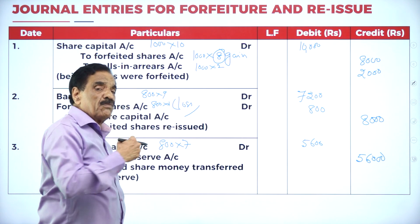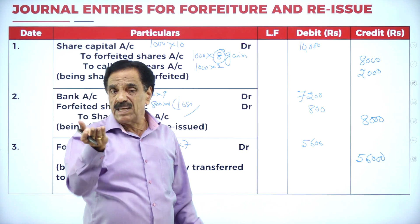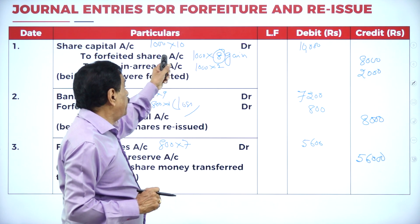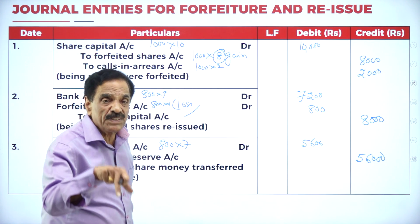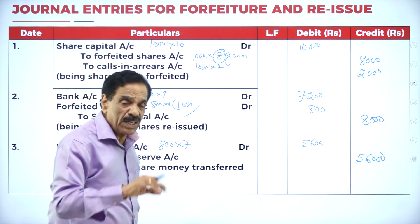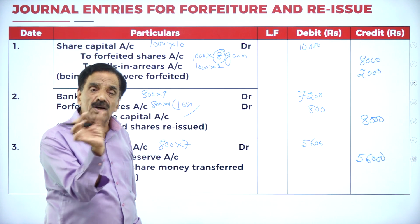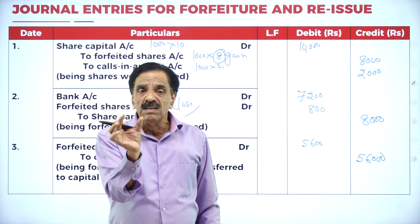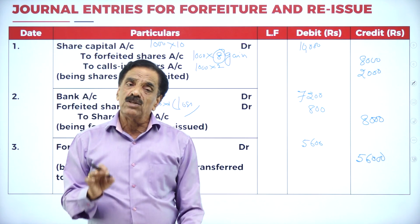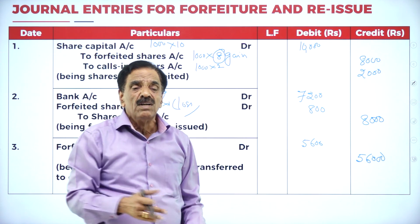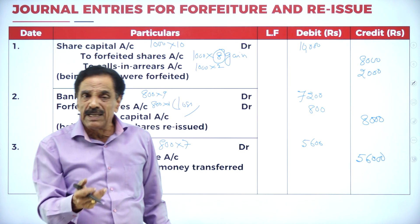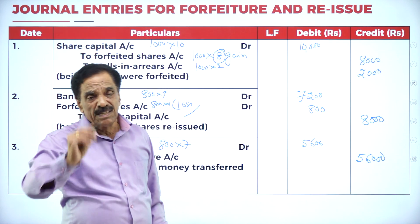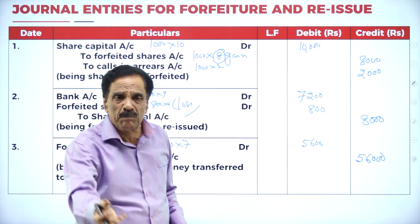In the previous problems, entire shares were reissued. In this problem, only partial shares were reissued. Out of 1,000 forfeited shares, only 800 were reissued, so we calculate capital reserve only for 800 shares. The remaining 200 shares will be further issued to the public when there is demand.